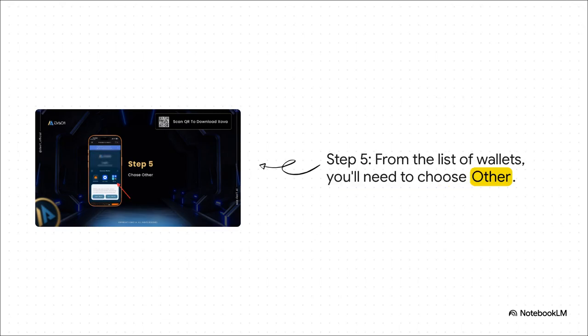Now, this is a key step. You might be scanning the screen looking for a XOVA logo, but you're not going to see it listed there. The option you actually need to choose is other. I know it feels a little weird, but trust me on this one — that's the right button to press.